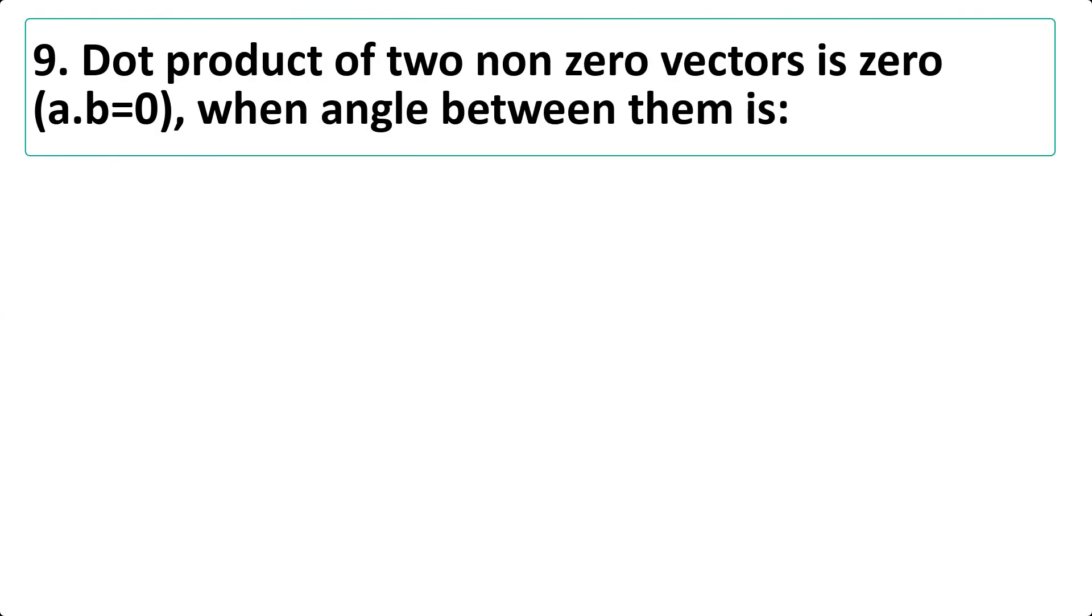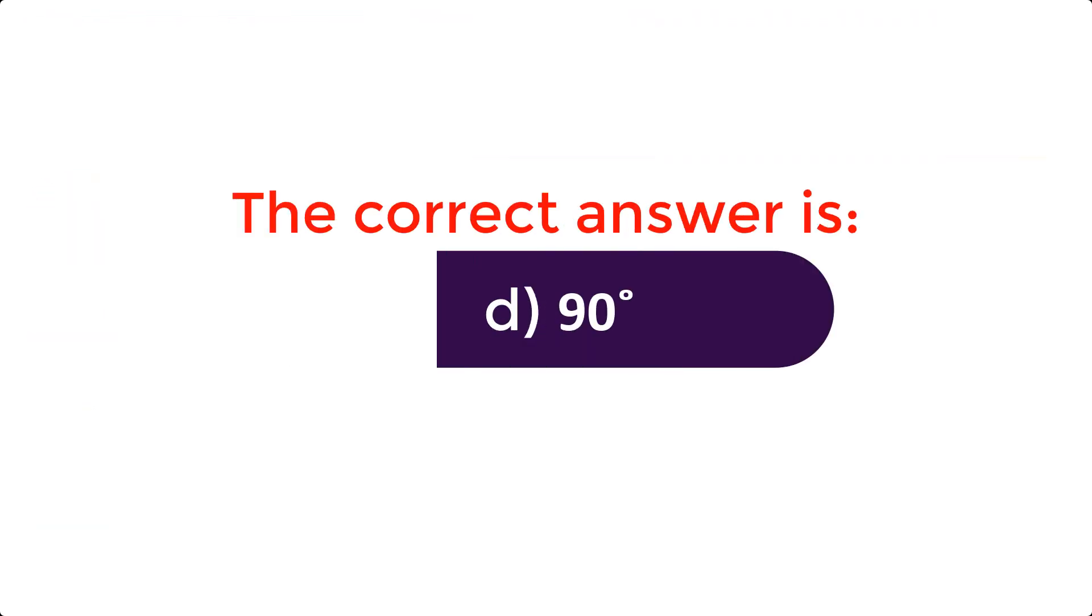Dot product of two non-zero vectors is 0, a.b equals 0, when angle between them is: a. 30 degree b. 60 degree c. 45 degree d. 90 degree. The correct answer is d. 90 degree. Question 8.